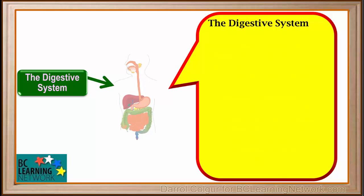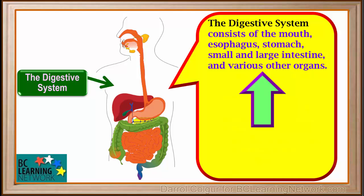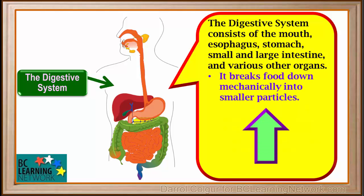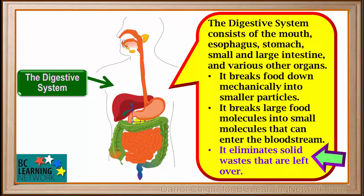The next system you learn about is the digestive system. The digestive system consists of the mouth, esophagus, stomach, small and large intestine, and various other organs. Its functions are to break down food mechanically into smaller particles, to chemically break large food molecules down into molecules that are small enough to enter our bloodstream, and to eliminate solid waste left over after these processes have occurred.